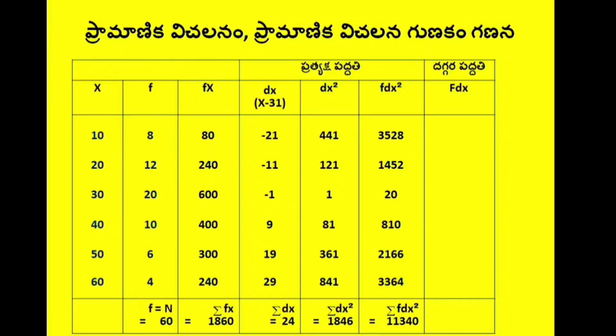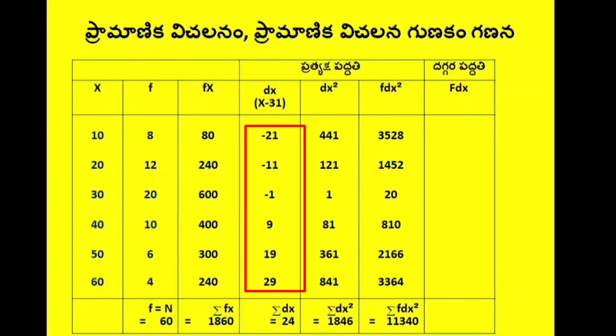In the shortcut method, the f values are 8, 12, 20, 10, 6, 4. The dx values are minus 21, minus 11, minus 1, 9, 19, 29.